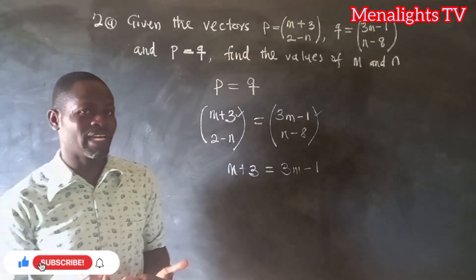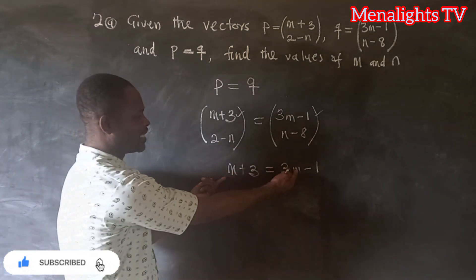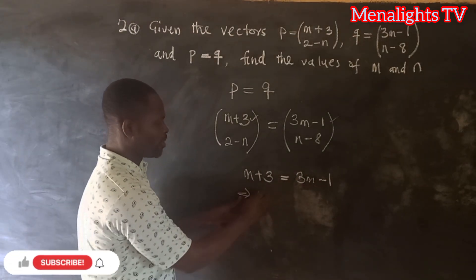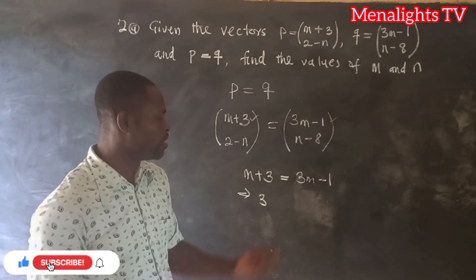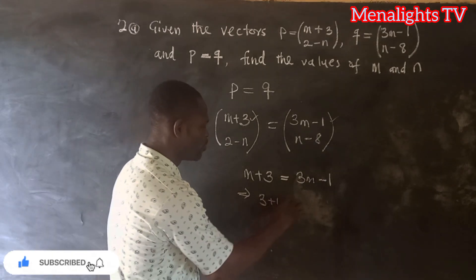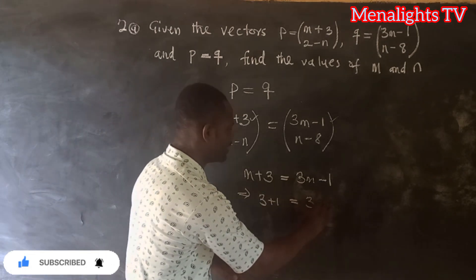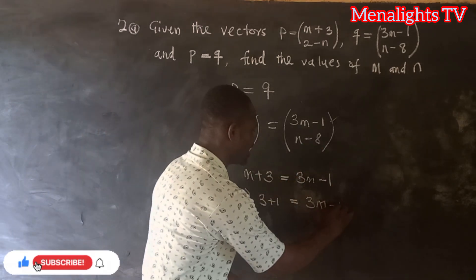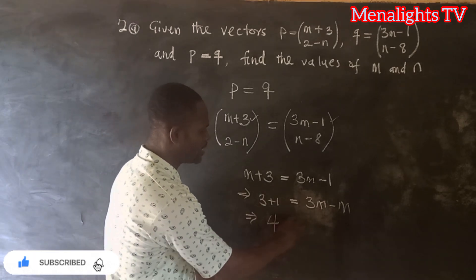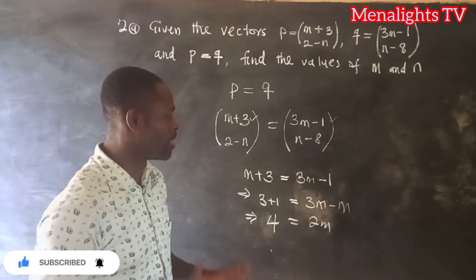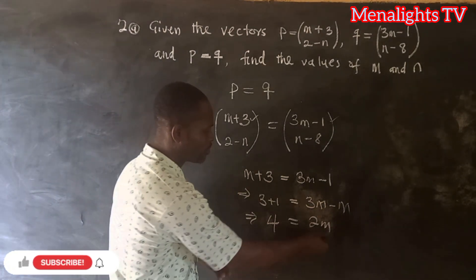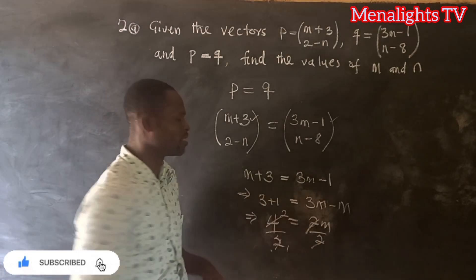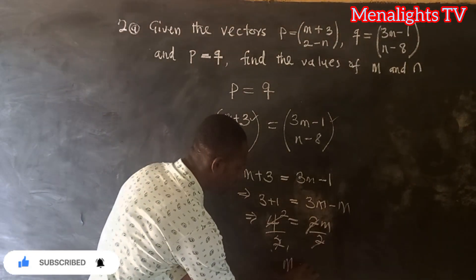We group like terms together. Moving the m to the right and the 1 to the left: 3 + 1 = 3m − m, giving us 4 = 2m. Dividing both sides by 2, we get m = 2.